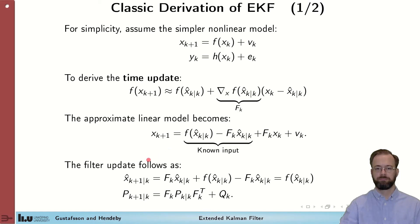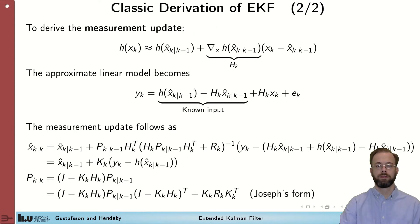Doing that, we get the filter equations here. Note that the only thing that differs compared to the normal Kalman filter is that instead of F times x, we have f of x in the update of the mean, and that F is not a known constant matrix, but instead the Jacobian of the function f.